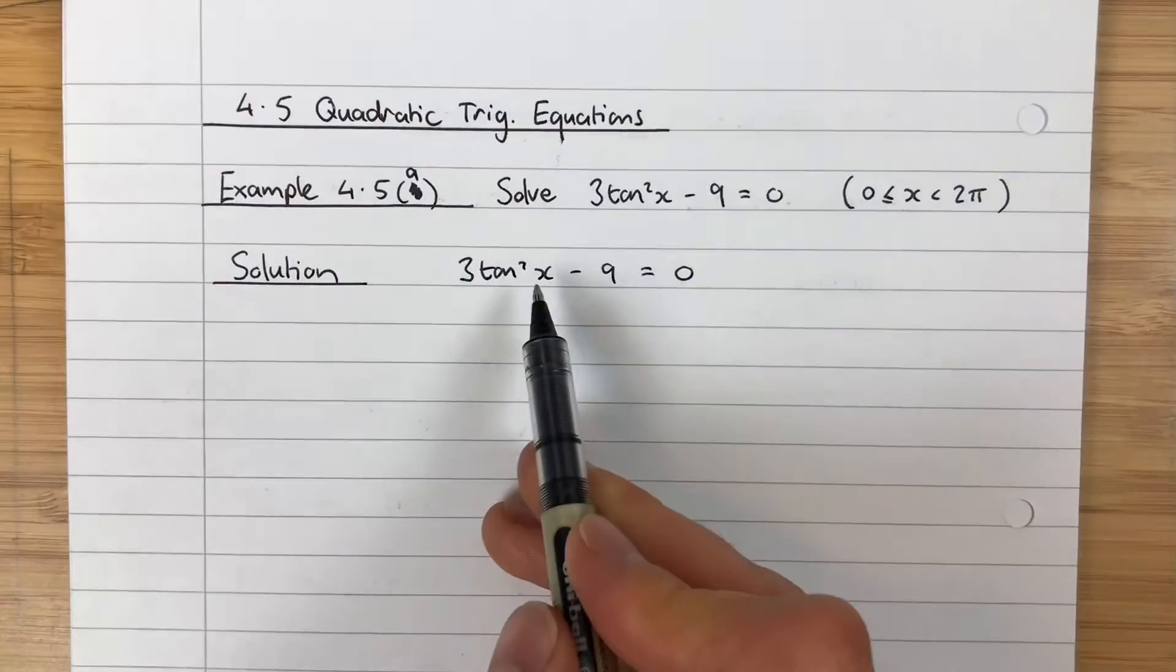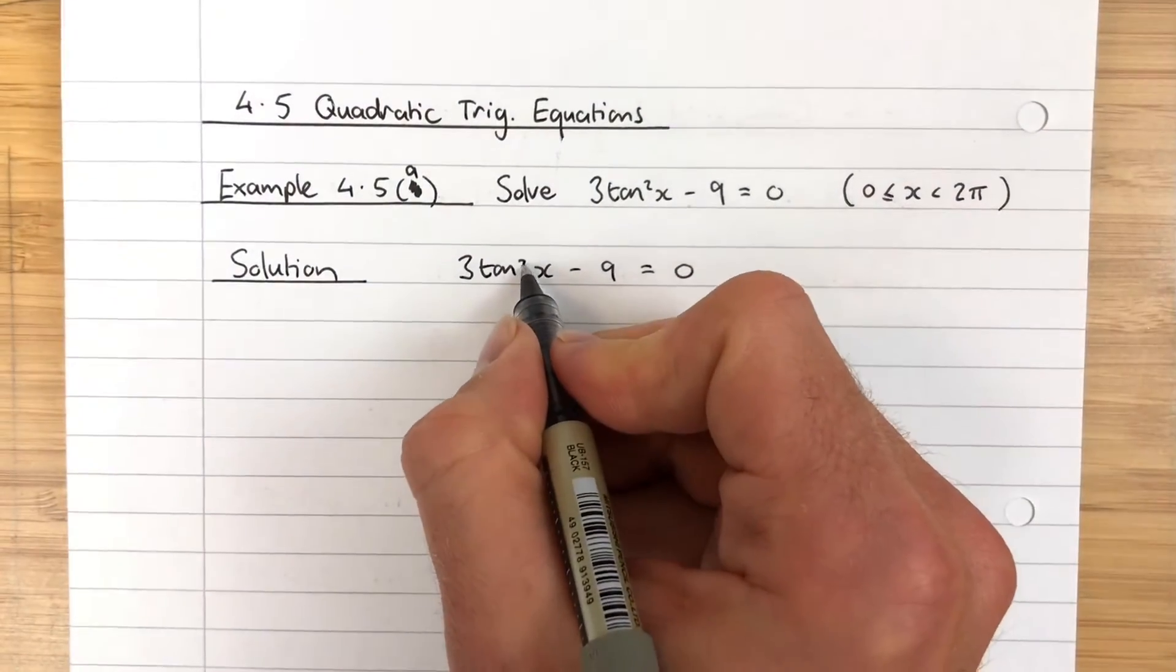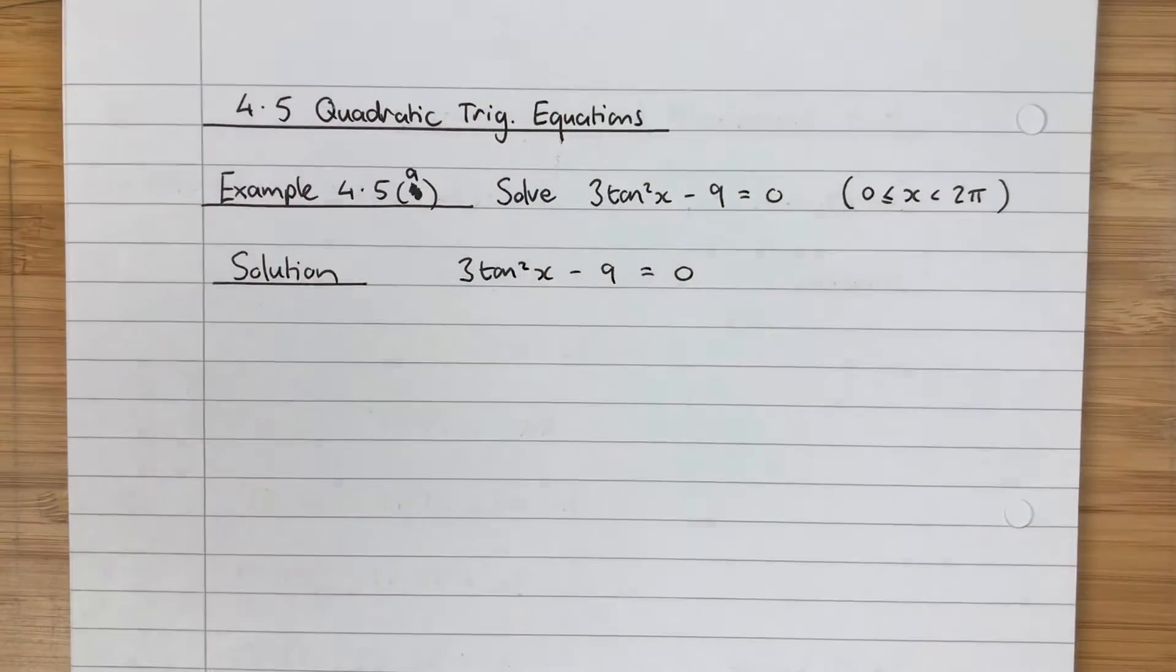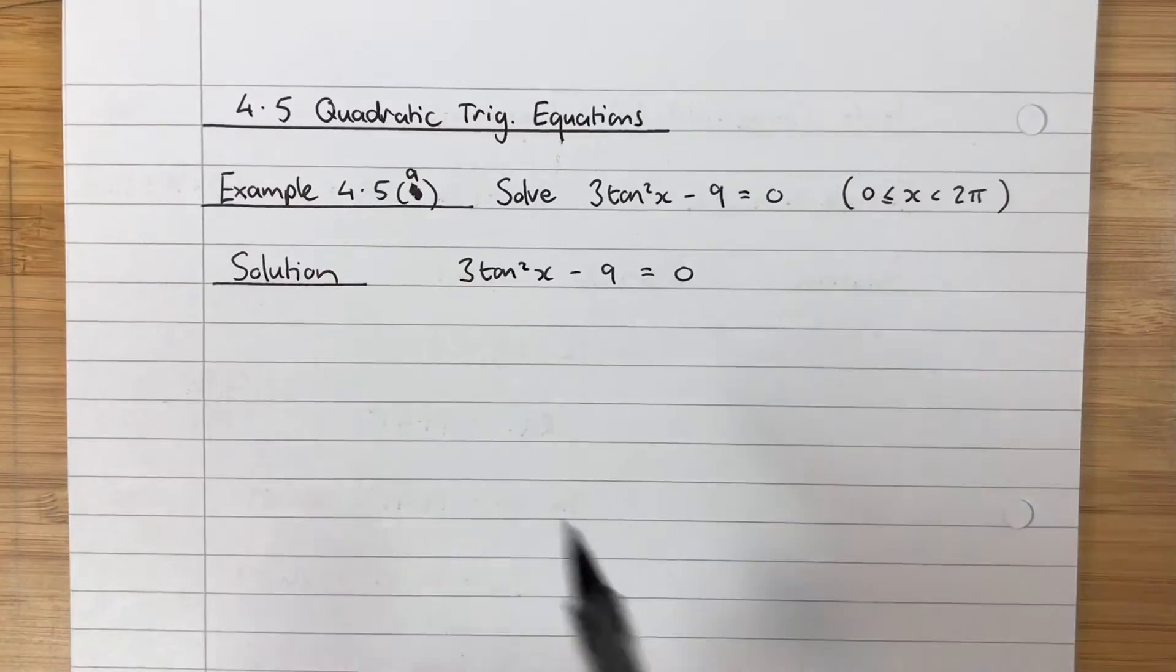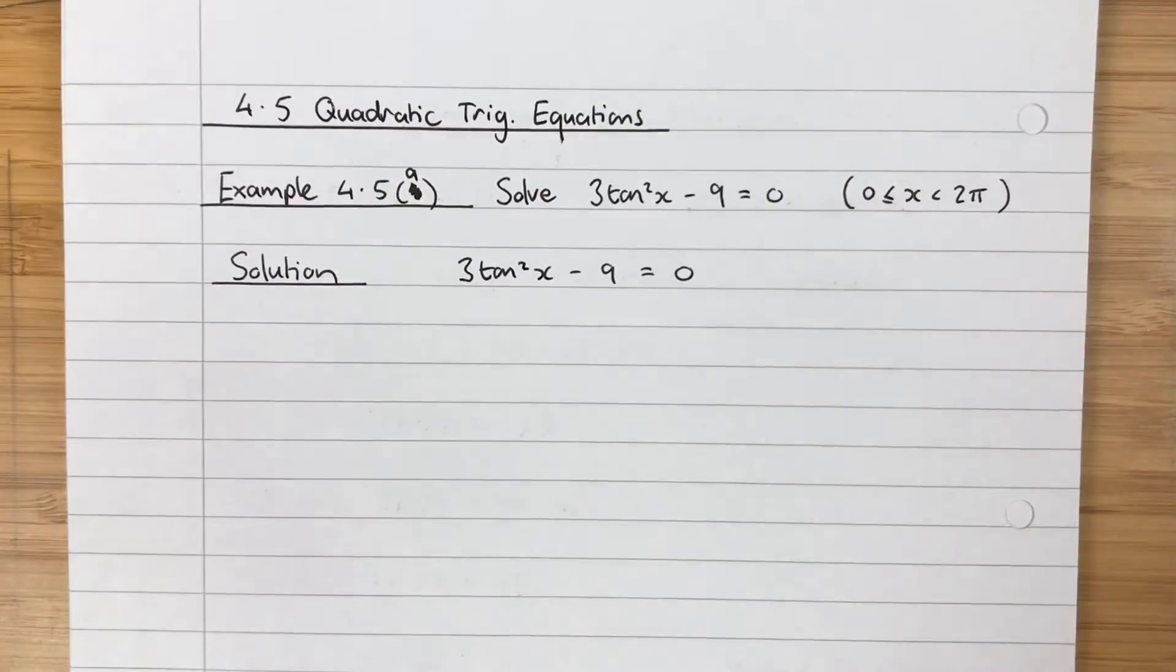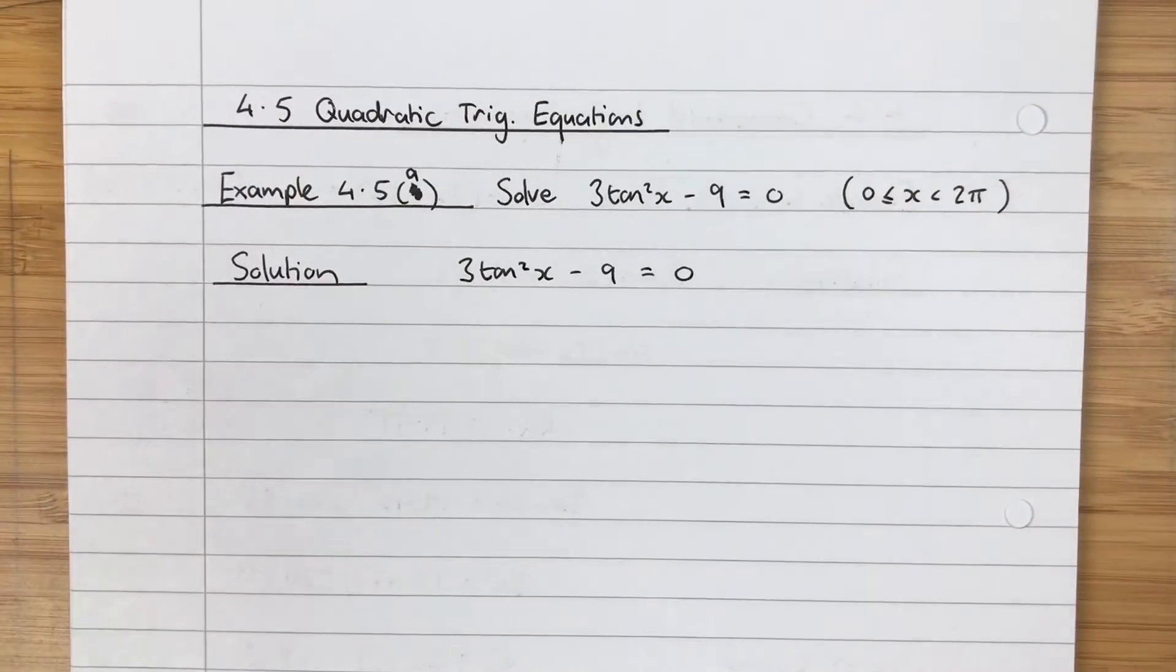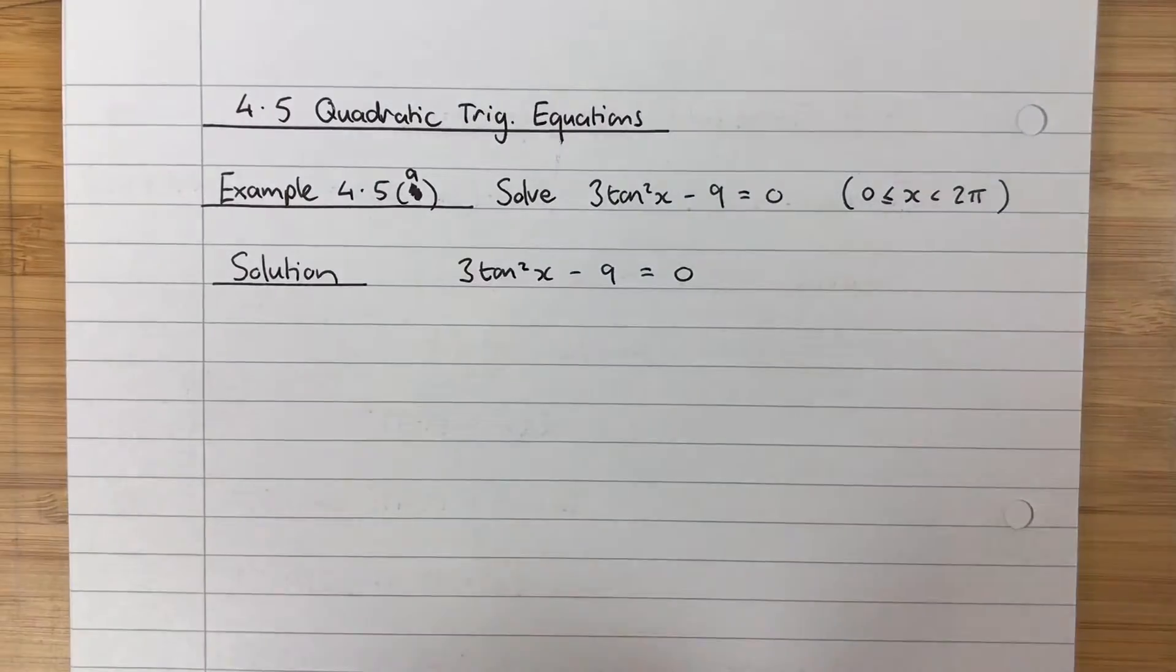We know it's quadratic because it's got the squared, the tan²x term. There is no other tan term, there's no other trig term, there's only the one term. That means we can rearrange this to isolate the trig term as we usually would, and it's perfectly valid to do that.